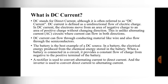AC current is the current present in household applications; DC current is present in battery sources. In a battery, electrical energy is produced from the chemical energy stored in the battery. When a battery is connected in a circuit, it provides a constant flow of charge from the negative to the positive terminal. A rectifier is used to convert alternating current to direct current. But for converting DC to AC, an inverter is used. That means AC to DC conversion uses a rectifier, and DC to AC uses an inverter.